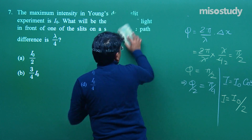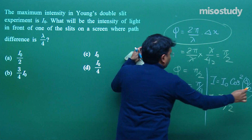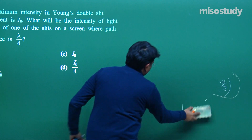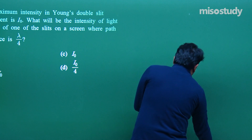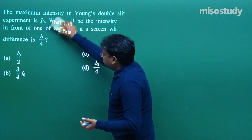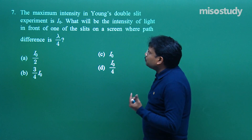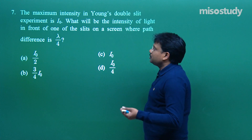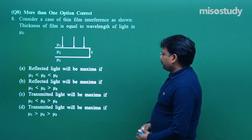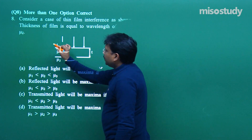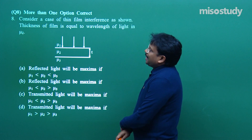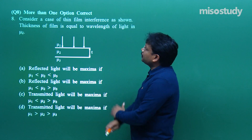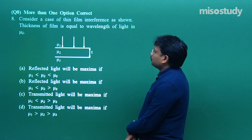After understanding this, let me emphasize once more: if at any point you pick up any question paper and review your performance, you will realize you didn't have conceptual gaps but made small mistakes, and because of that you missed a good rank by some marks. That should not happen. Now, question 8 — I would place this in moderate to difficult category. Consider a case of thin film interference as shown.